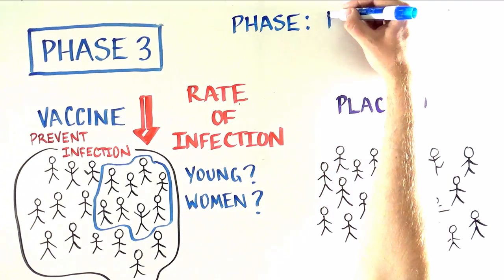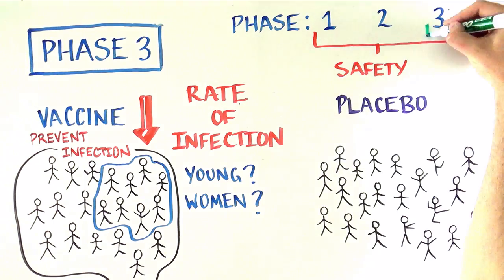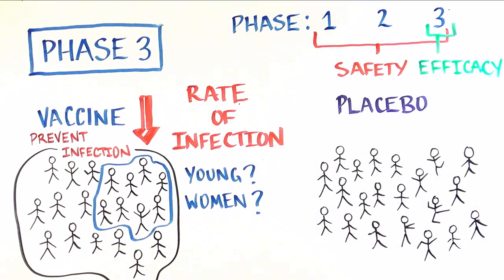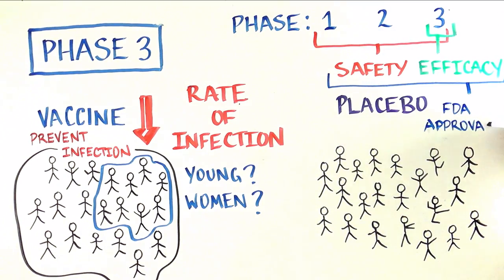Along with the safety data that is collected in all phases of vaccine studies, this efficacy data is used by the FDA to decide if the vaccine should be licensed, and if so, for whom it is recommended.